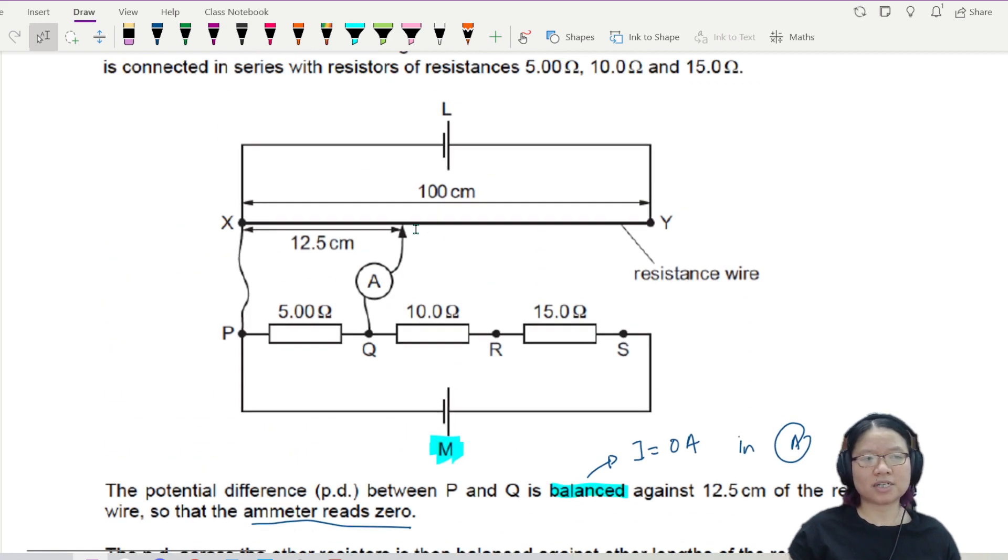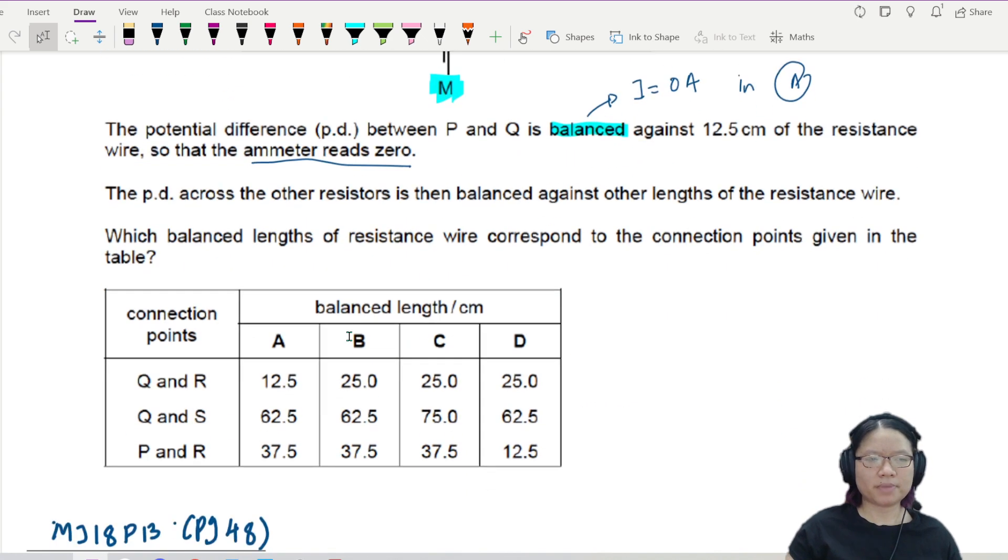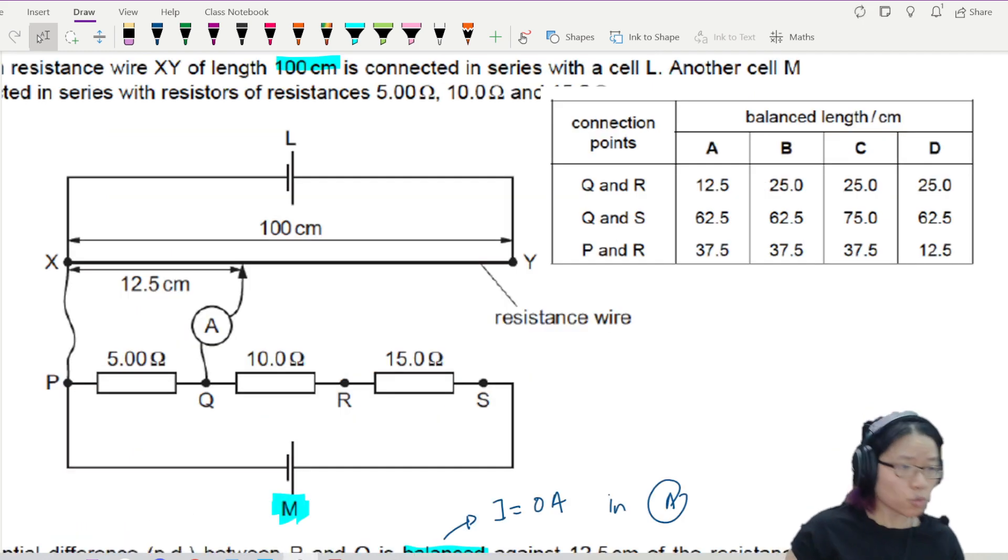So basically I just got to adjust this one. So I put it at 5 ohm, I adjust until I get zero reading. And then I can put it at different connection points and then I adjust to get zero reading. Which balanced length of resistance wire corresponds to the connection point given in the table? Let me crop the table and put it near the circuit first.